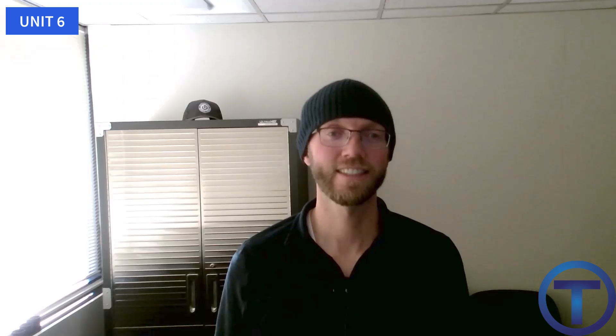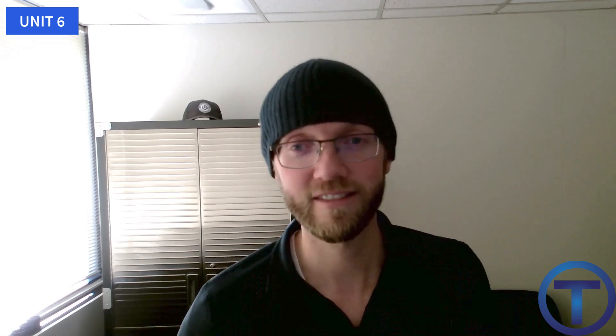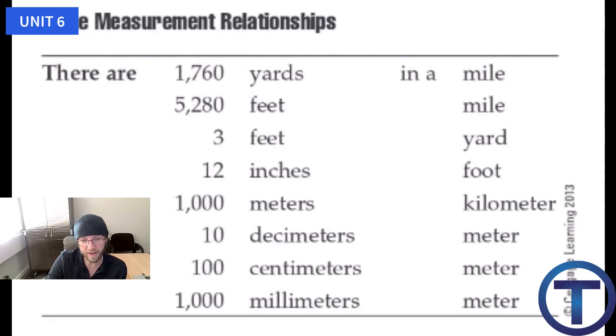If you're still awake you're amazing — writing out problems on screen tends to be monotone. If you fell asleep, wake up and do some planks or push-ups! Now, let's quickly go over some measurement relationships: 1,760 yards in a mile, 5,280 feet in a mile, 3 feet in a yard, 12 inches in a foot, 1,000 meters in a kilometer, 10 decimeters in a meter, 100 centimeters in a meter, 1,000 millimeters in a meter.